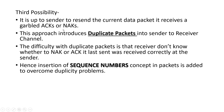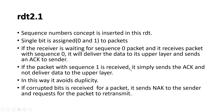If the sender receives garbled ACKs or NAKs, it is the sender's responsibility to decide whether to retransmit. If the sender retransmits and the previous data was already received correctly, there can be a possibility of duplicate packets. The difficulty with duplicate packets is that the receiver doesn't know whether its last sent ACK or NAK was received correctly by the sender. Hence, the solution is the insertion of sequence numbers, which is part of RDT 2.1 and will be discussed in the next video.